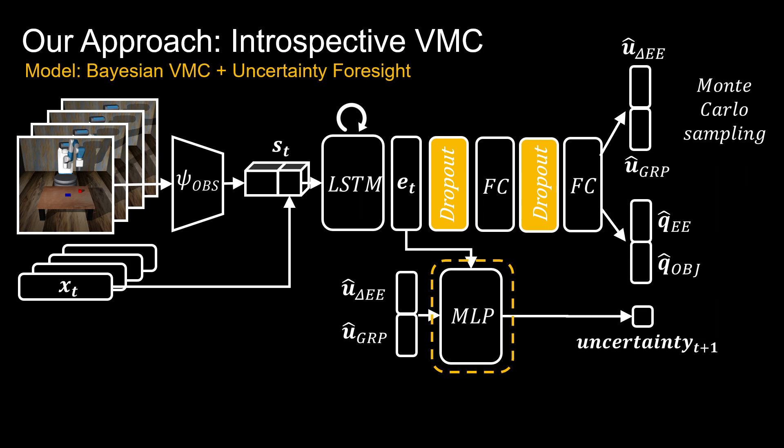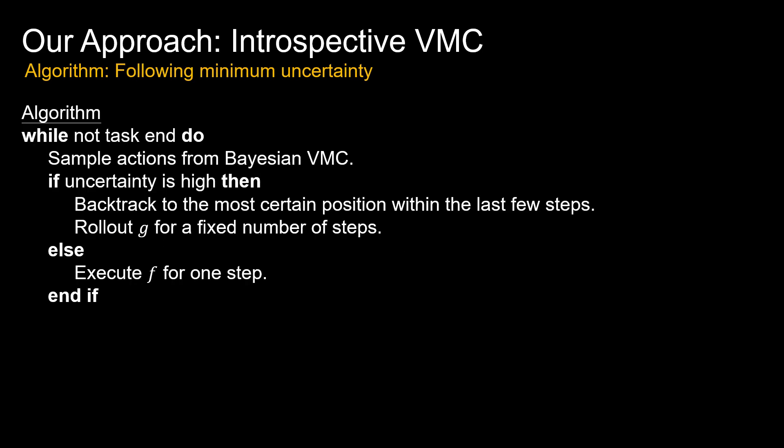Uncertainty foresight provides us with an uncertainty estimate associated with the current robot state conditioned on an action. We propose to follow the action that leads to the minimum uncertainty when we switch to the recovery mode.